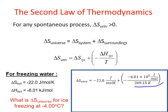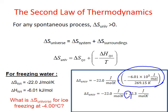For the entropy change of the surroundings: −(−6.01 × 10³ J/mol) ÷ 269.15 K = +22.3 J/mol·K. The negative of a negative gives a positive overall. Combining +22.3 J/mol·K from the surroundings with −22.0 J/mol·K from the system gives a net delta S(universe) of +0.3 J/mol·K. The entropy of the universe does increase when ice freezes below 0°C — this is a spontaneous process.